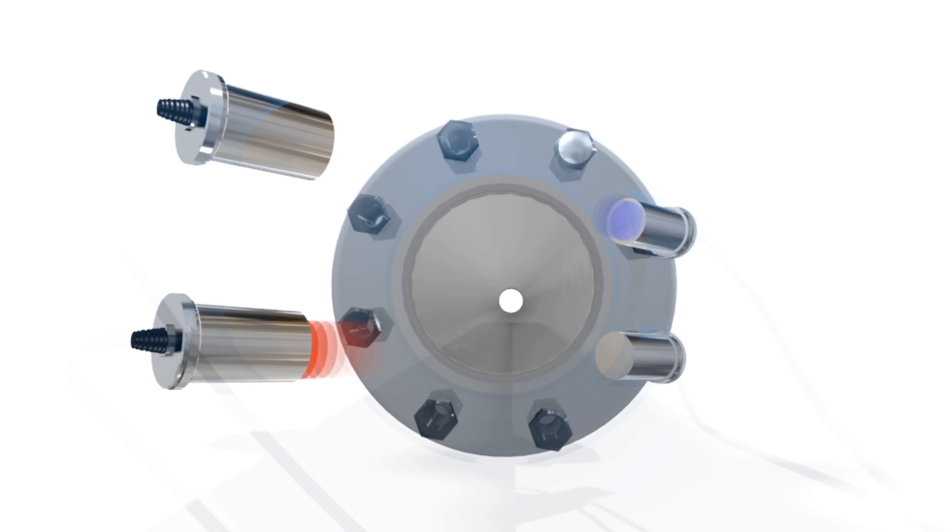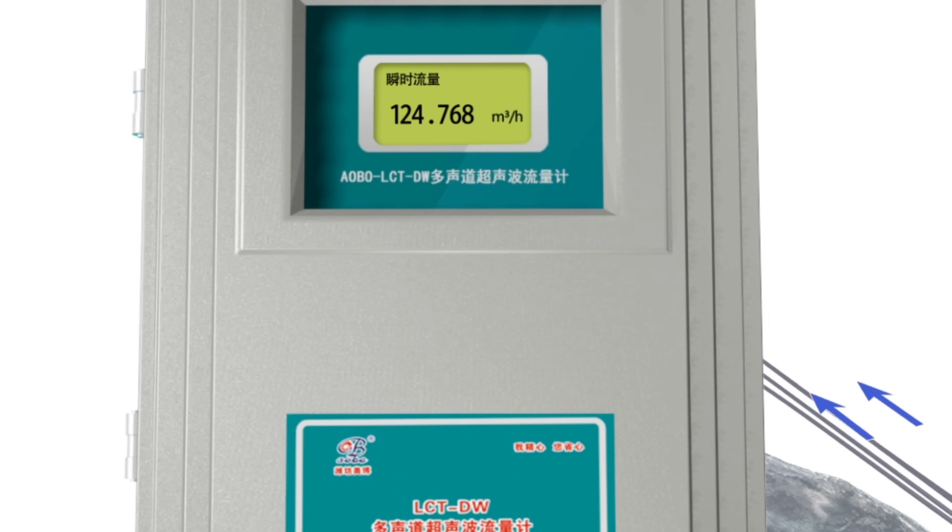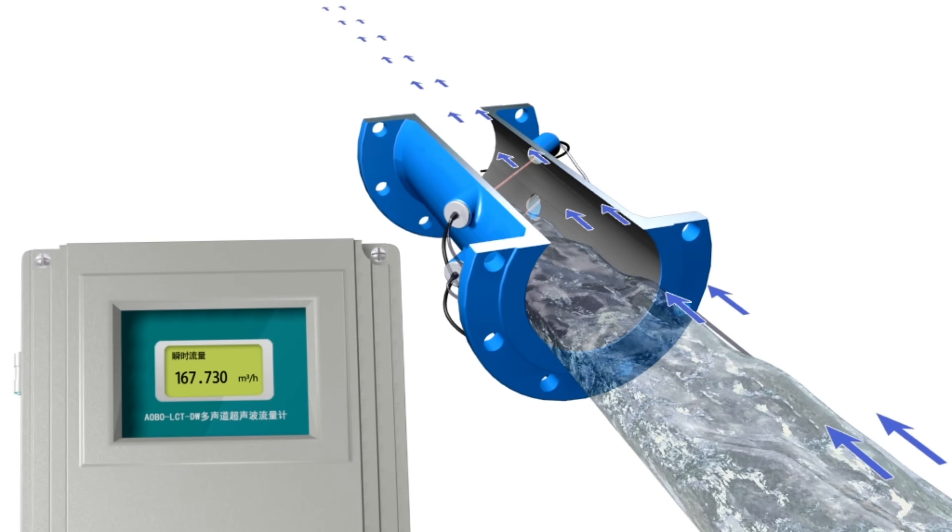The ultrasonic flow meter can accurately measure the flow velocity of two different sections, independent of temperature, pressure, density, and viscosity.